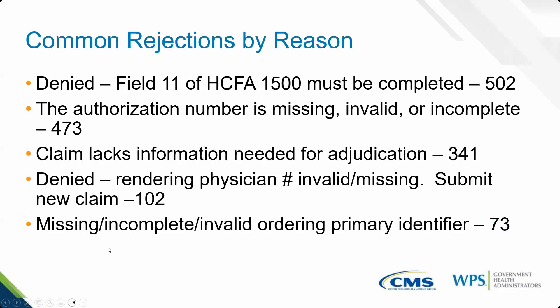Let's now look at that data. For specialty 09 providers, I'm first going to talk about rejections — which are those with invalid, incomplete, or missing information that you need to fix and resubmit. The first common rejection on the remittance advice states: denied field 11 of HCFA 1500 must be completed. This is cryptic because it's actually a rejected claim not a denial, and it uses the outdated HCFA 1500 name — it is now the CMS 1500 claim form. There were 502 rejections for this reason. Field 11 cannot be left blank; if there is no other insurance primary to Medicare, you need to include the word 'none' in field 11 or the electronic equivalent.